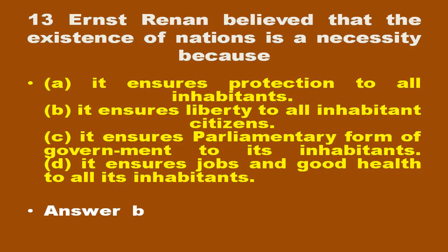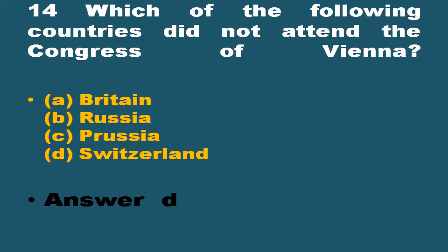Question number 13: Ernest Renan believed that the existence of nations is a necessity because? The answer is it ensures liberty to all inhabitant citizens. Question number 14: Which of the following countries did not attend the Congress of Vienna? Options are Britain, Russia, Prussia, and Switzerland. The answer is Switzerland.